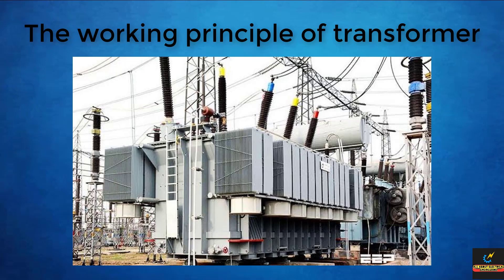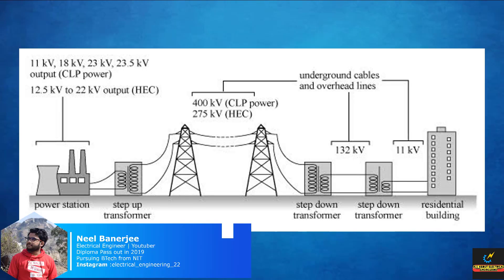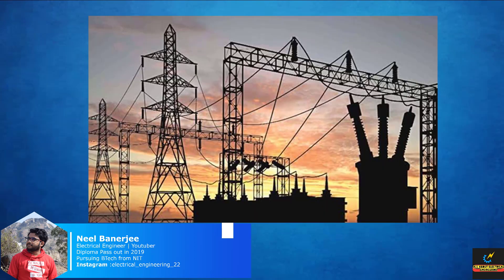The transformer is probably one of the most important and useful electrical devices ever invented. It can change the magnitude of alternating voltage from one value to another. This useful property of transformer is mainly responsible for the widespread of alternating current rather than direct current.